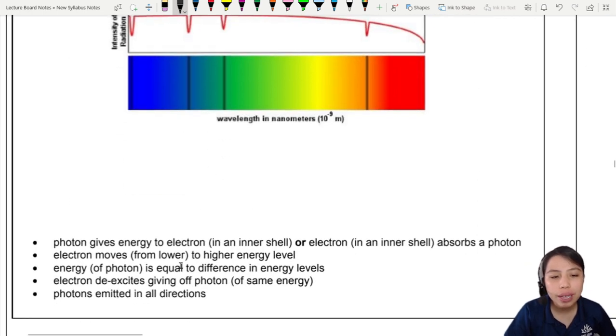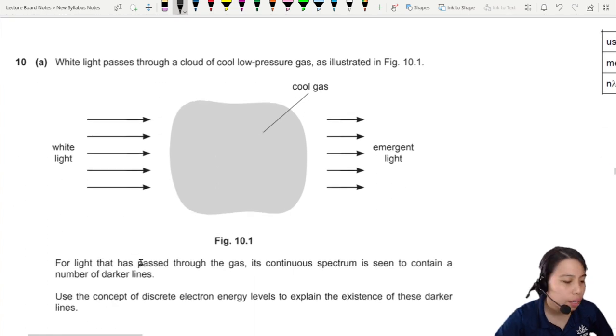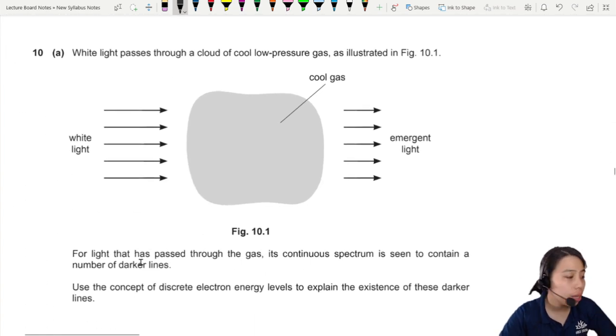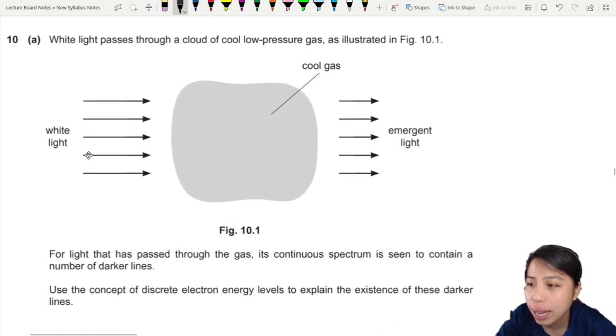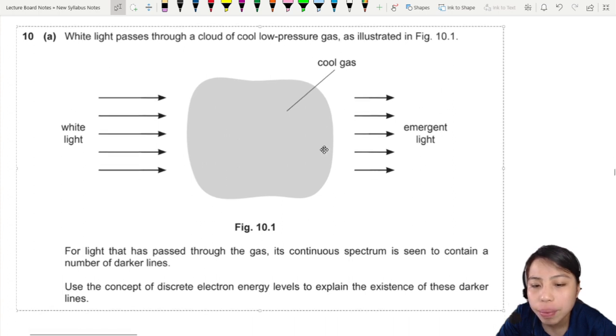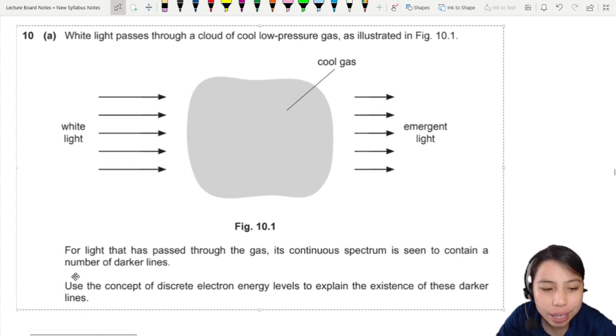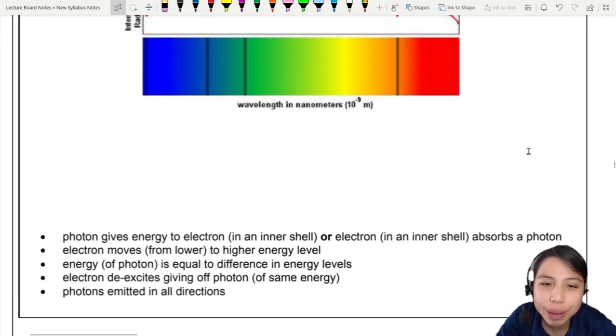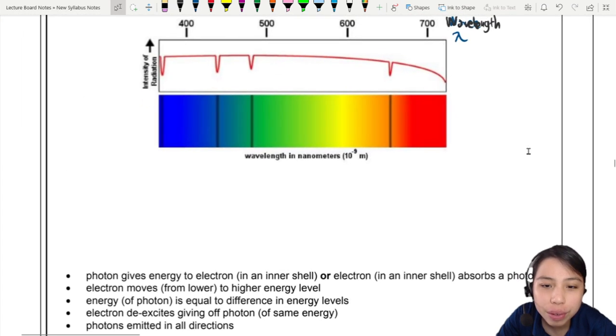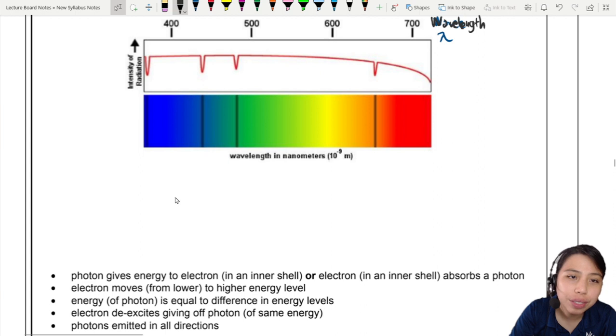This is a snippet from MJ20P41 where they ask basically the same thing from quantum physics. White light passed through a cloud of low pressure gas. White light comes in, continuous spectrum, goes through, some wavelengths are missing. They'll say the continuous spectrum contains a number of dark lines. Explain what are these dark lines. This is a recap of what we learned before.